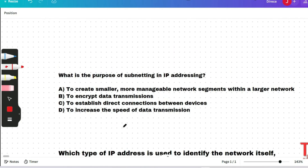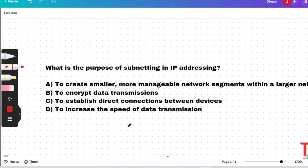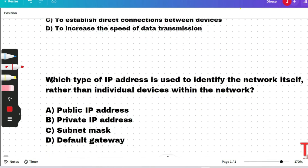Question: what is the purpose of subnetting in IP addressing? Options: to create smaller, more manageable network segments within a large network; to encrypt data transmission; to establish direct connections between devices; or to increase the speed of data transmission. The correct answer is option A — subnetting is used to create smaller network segments within a large network, improving network management and addressing efficiency.